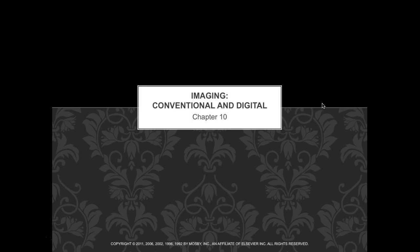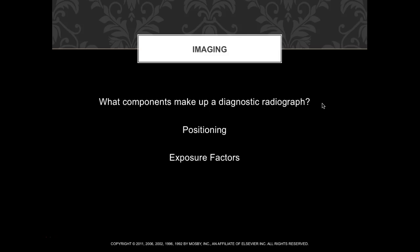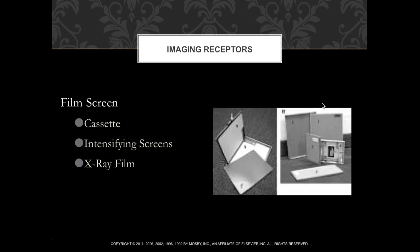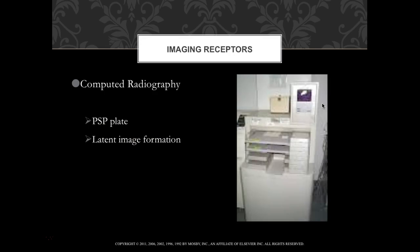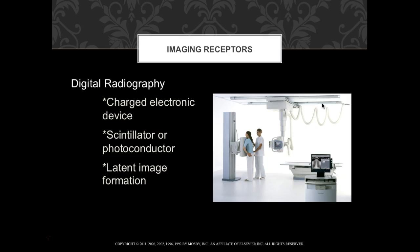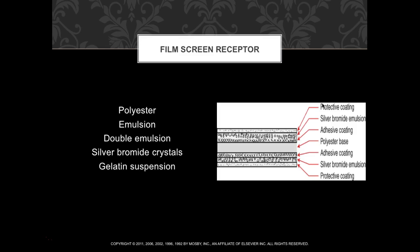We're going to talk about conventional and digital imaging — the components that make up a diagnostic radiograph. You need to have the position, the anatomy, and the exposure factors. When talking about image receptors, we'll cover film first, then computed radiography with a PSP (photo-stimulable phosphor) plate that has a latent image, and digital radiography which uses a charged electronic device, scintillator, or photoconductor.